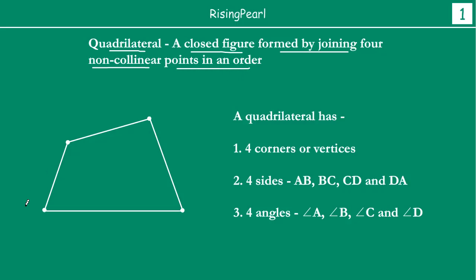Aaj se katke Dostoy, agar hamay 4 points dih jati hai, maan lijiye if we have points A, B, C and D. Agar aise katke hamay 4 points dih jati hai Dostoy, so we first join A to B, then B to C, then C to D and D in that order. Then we get a closed figure which has 4 sides: AB, BC, CD, DA.